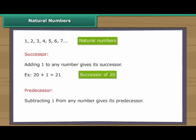Subtracting one from any number gives its predecessor. For example, subtracting one from twenty gives nineteen, which is the predecessor of twenty.